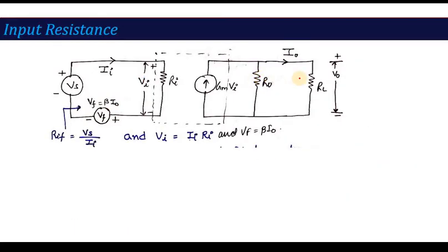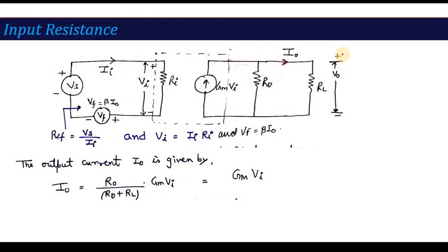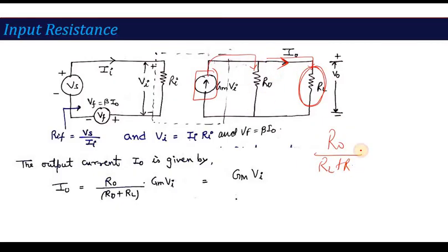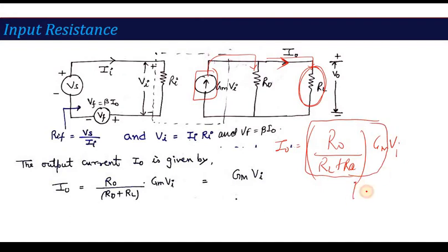Moving to the output side, we need the current i0 through RL using the current division rule. The total current gm*vi divides between r0 and RL, so i0 = (r0 / (RL + r0)) * gm*vi. We represent the factor r0*gm / (RL + r0) as capital GM — that is, the transconductance including the effect of RL. So i0 = GM*vi.